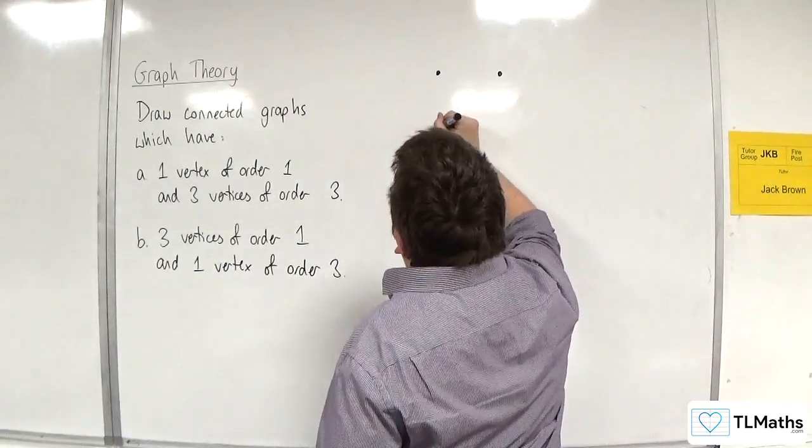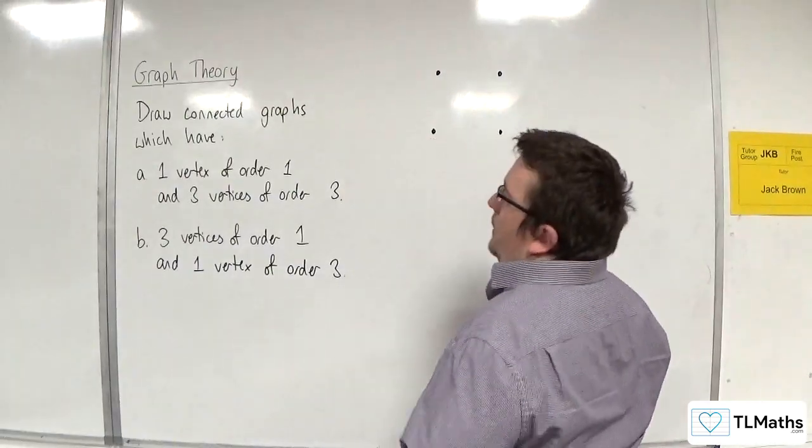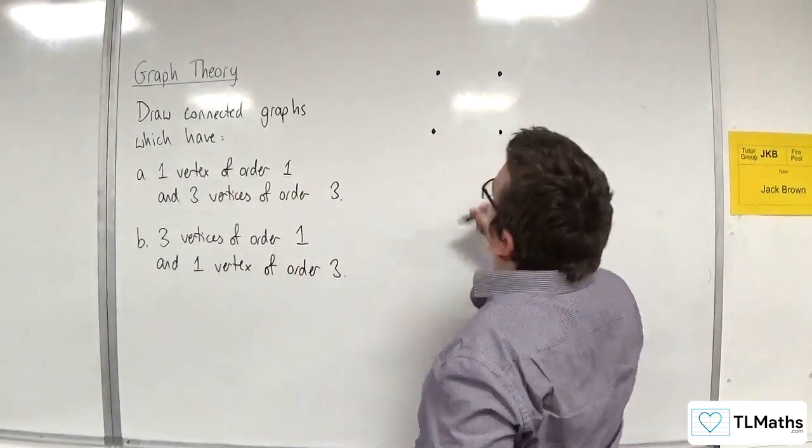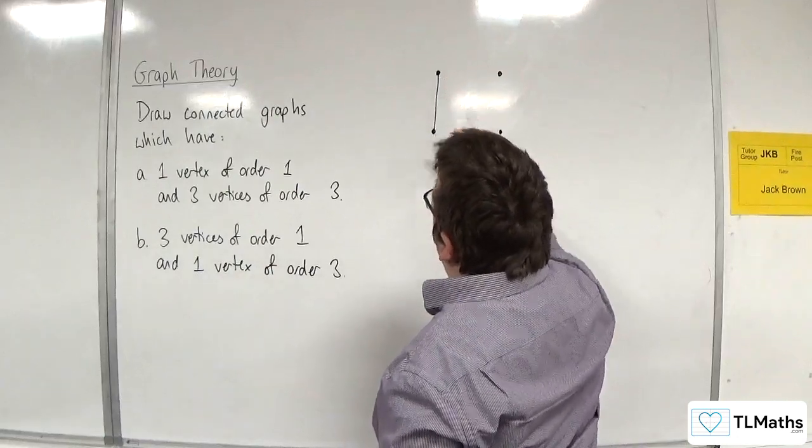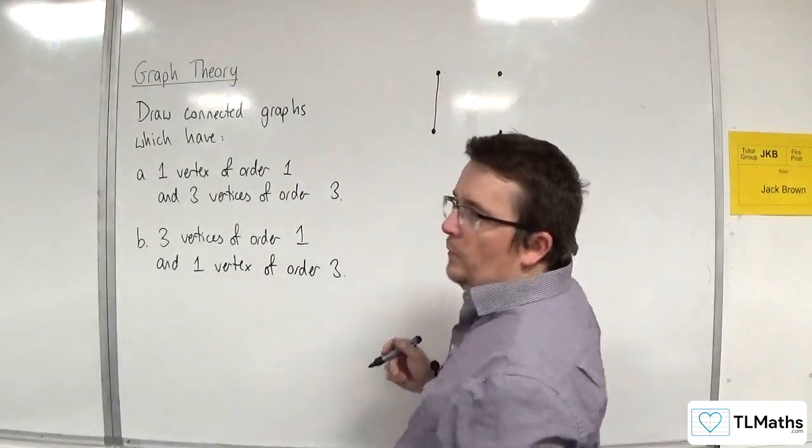One, two, three, four. Now, the first one has order 1. So I can just draw one root coming out of that one. So that one's done.